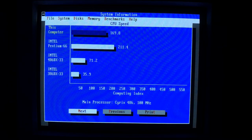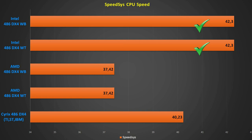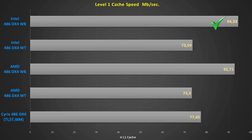The first CPU benchmark is NordenSysInfo. The Intel and AMD with write-back cache both scored 216 points, while Cyrix scored 169 points — losing the first round. Next is Species: both Intel CPUs won with 42.3, with no difference between write-through and write-back. AMD was the slowest at 37.42. For level 1 cache timing, the Intel with write-back cache leads at 94.33 MB/s, followed by AMD write-back at 92.71 MB/s, with the other three CPUs in the range of 73–77 MB/s.